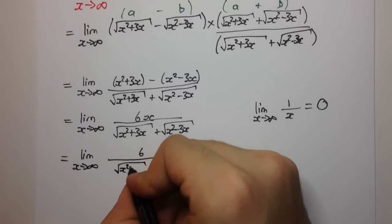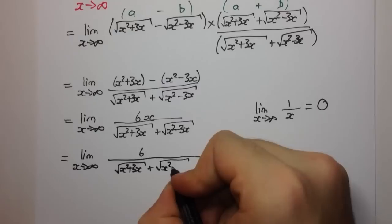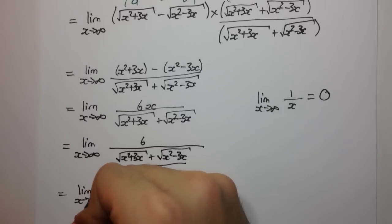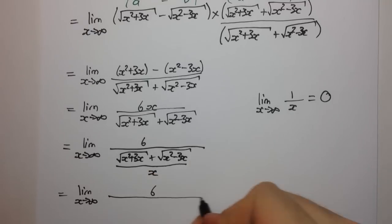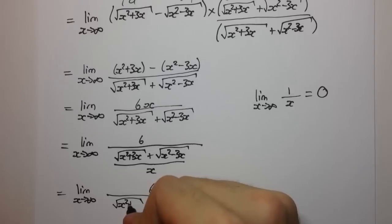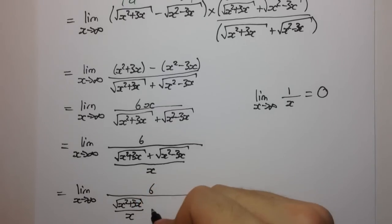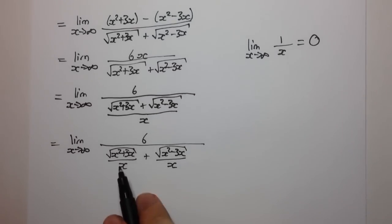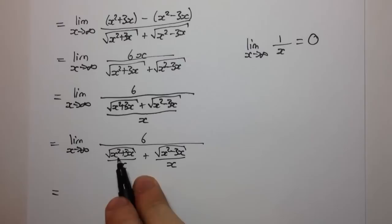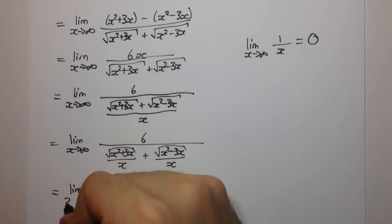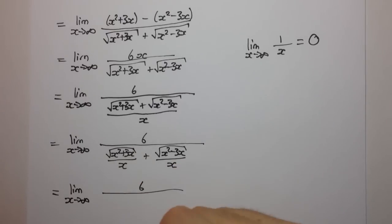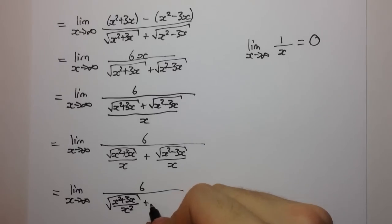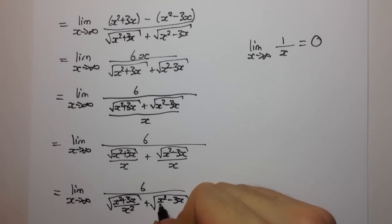If we do that, here we're going to have 6x divided by x, which will be just 6. On the bottom, we can split this into two fractions: the square root of x squared plus 3x over x, plus the square root of x squared minus 3x over x. We can bring this x inside the square root and make it x squared. So it's going to be the limit as x approaches infinity of 6 over the square root of x squared plus 3x over x squared, plus the square root of x squared minus 3x over x squared.